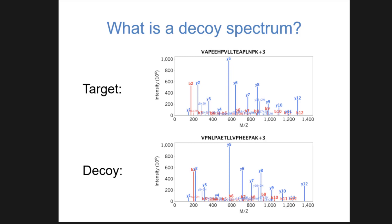An important question is how do you generate a decoy spectrum? It's pretty obvious how you would generate a decoy peptide — you take that sequence and scramble it or reverse it. Generating a decoy spectrum is a little bit more complicated but conceptually the same idea. You take a sequence for your target peptide from a spectrum library and do a reverse of it. Remember how Y1 is really common — B1 is really common too, so you don't want to accidentally swap those out. You want to keep Y1 where it is and B1 where it is, but all the other fragment ions you can swap.